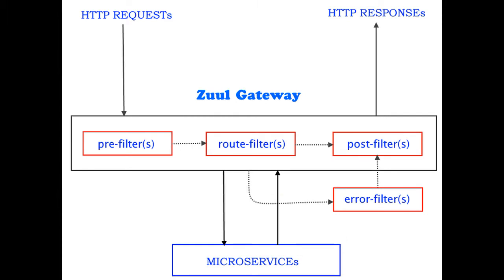Now we will look at Zuul components. Zuul has mainly four types of filters that enable us to intercept the traffic in different timelines of the request processing for any particular transaction. We can add any number of filters for a particular URL pattern.